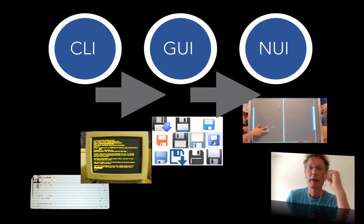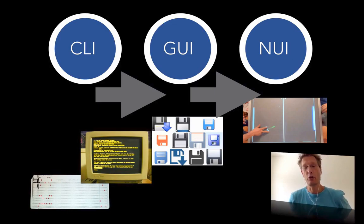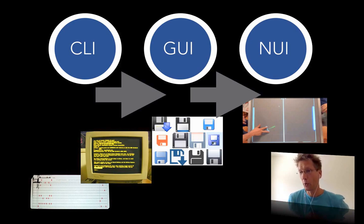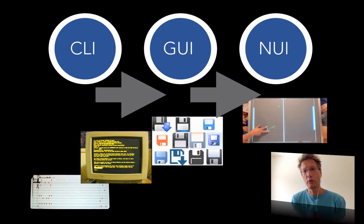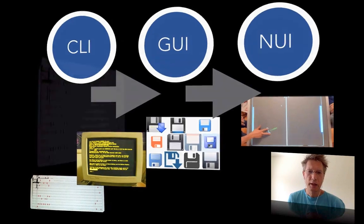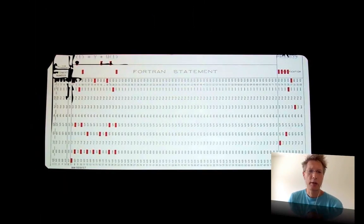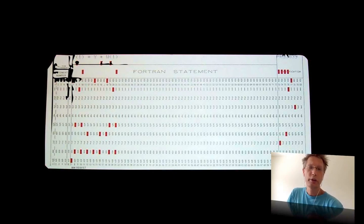We saw the other day and the day before how punch cards went to VT100 to disk as an icon, as Pong, as a touch game — from a command line interface to a GUI to a graphical user interface to a natural user interface. I told you about how punch cards are actually used for programming, in this case Fortran, an old computer language, on mainframes and computers in general.